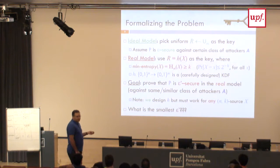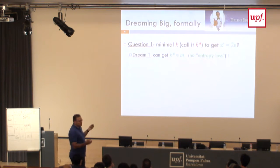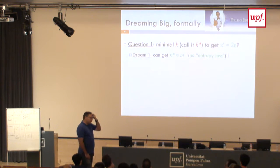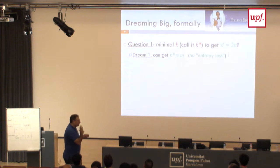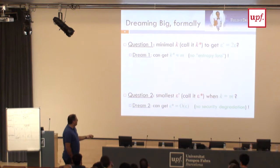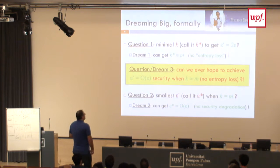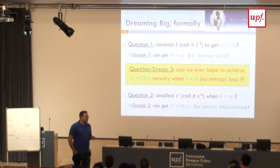What is the smallest epsilon-prime we can achieve in this level of generality? The first question: what is the minimal min-entropy to get comparable security, say epsilon-prime equals two epsilon? We hope K-star equals M. The complementary question: if K equals M, what is the smallest epsilon-star? Our hope is that it's order of epsilon. The dream is that we can simultaneously, for K equals M, achieve epsilon-prime equals order of epsilon.